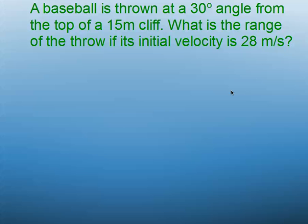A baseball is thrown at a 30 degree angle from the top of a 15 meter cliff. What is the range of the throw if the initial velocity is 28 meters per second? Before we start, this one is going to be a little bit trickier than the other ones, so buckle up.